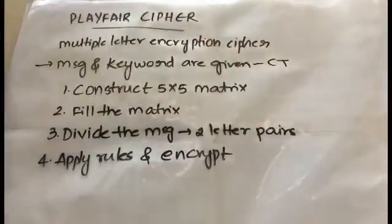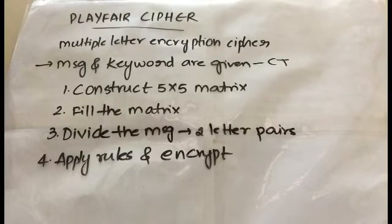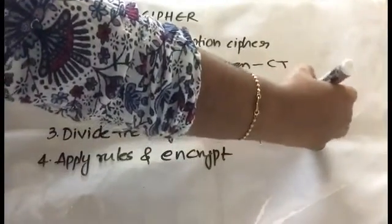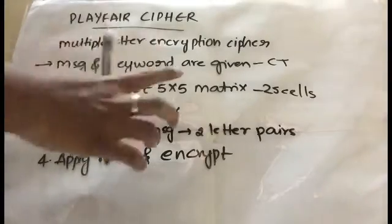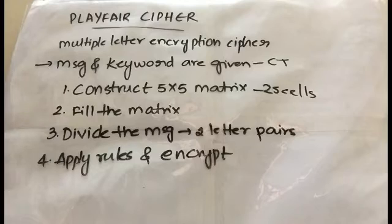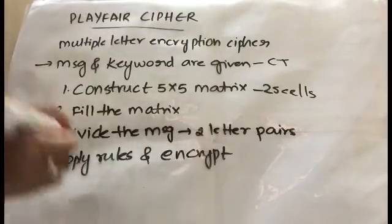There are some steps in Playfair cipher. The first step is to construct a 5×5 matrix with 5 columns and 5 rows, giving 25 cells total. The second step is to fill the matrix, which I will explain shortly. Then we divide the message into two-letter pairs. Finally, we apply rules to encrypt the message.